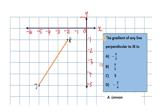We have a question here that states: the gradient of any line perpendicular to JK is — with several options given. So first off, we need to find the location of the endpoints.